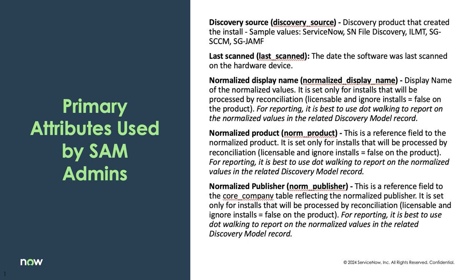The next three attributes we look for are the normalization properties: the Normalized Display Name, the Normalized Product, and the Normalized Publisher. These are all attributes that we're going to want to look to as we're running through the software installations.